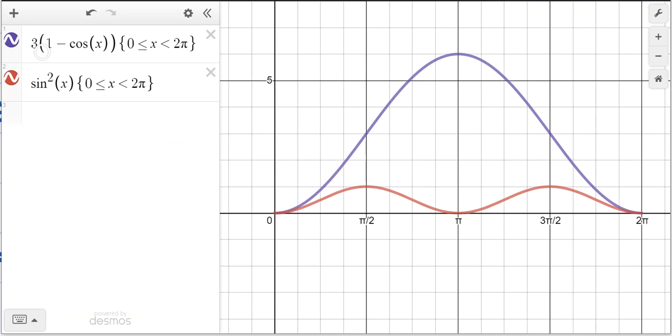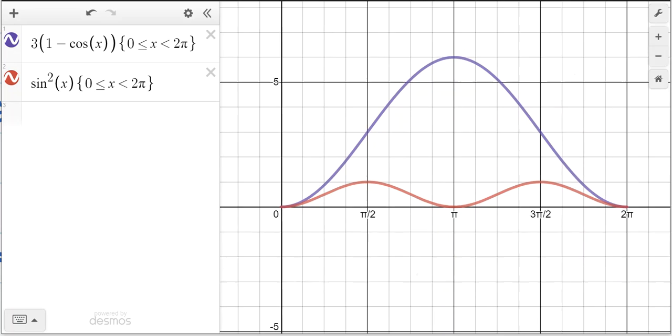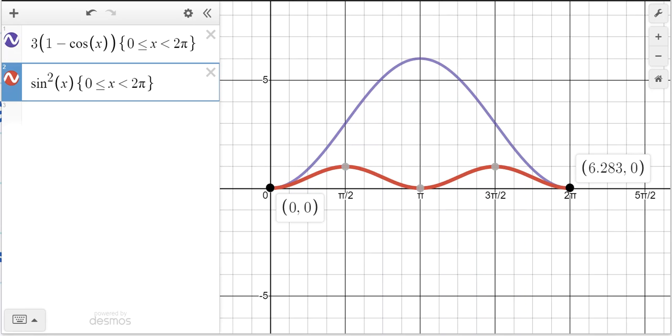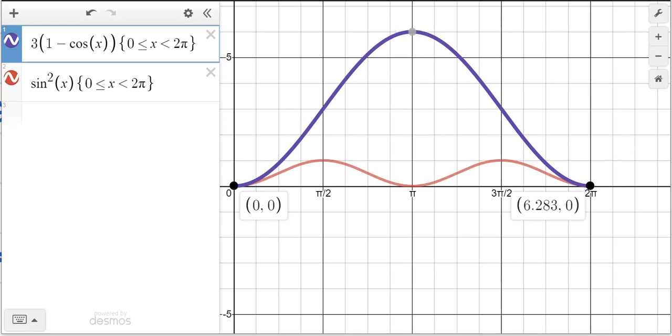The purple line represents 3 times 1 minus cosine theta. And the red line represents sine squared theta. And I've restricted the domains between 0 and 2 pi so that the solutions only exist between 0 and 2 pi within one unit circle. So it looks like the graph intersects right here at an x value or theta value of 0, which is indeed true. And it looks like that the graphs intersect over here. And that's a bit misleading because remember,